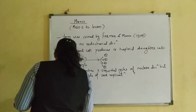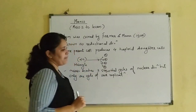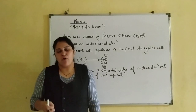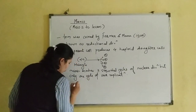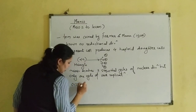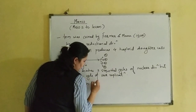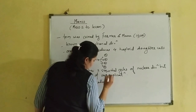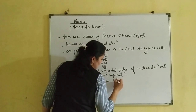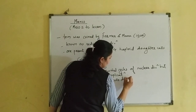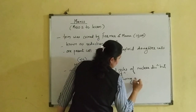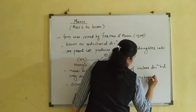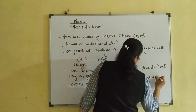Meiosis occurs in reproductive cells, mostly at the time of gametogenesis. In the case of male individuals, we call it spermatogenesis. We know that sperm cells are haploid structures and eggs or ova are haploid structures. Meiosis occurs in reproductive cells during gametogenesis.